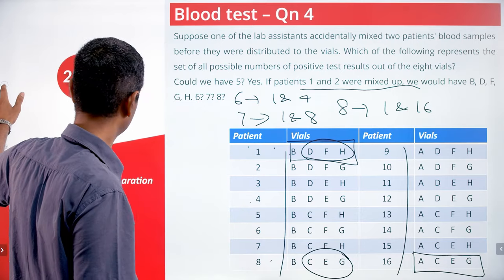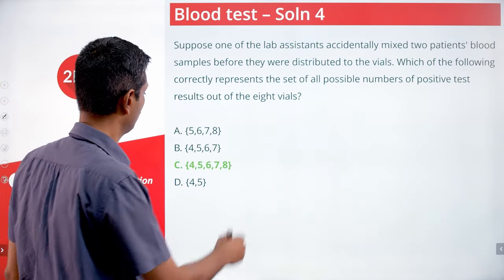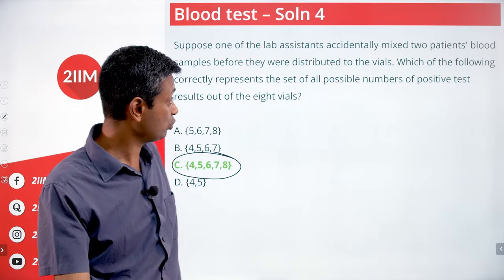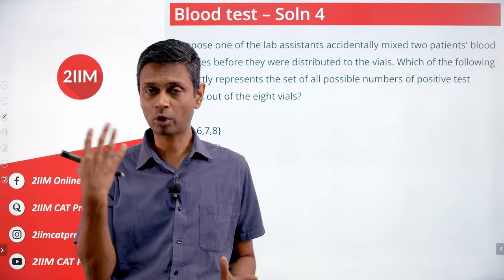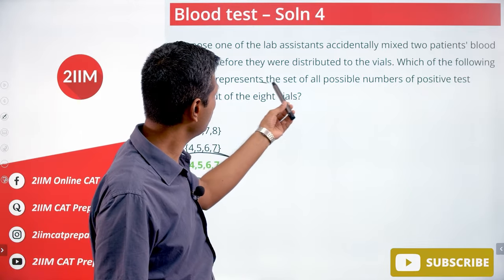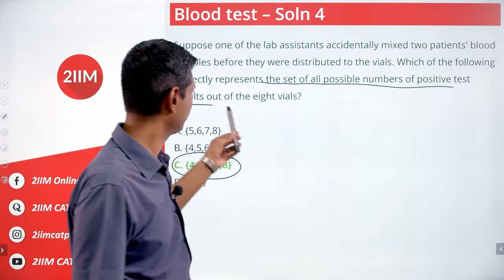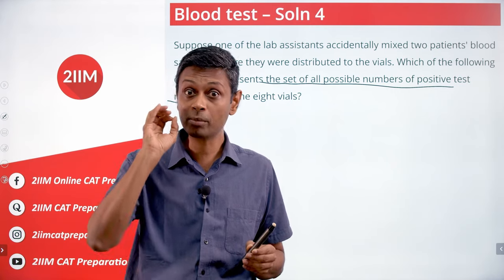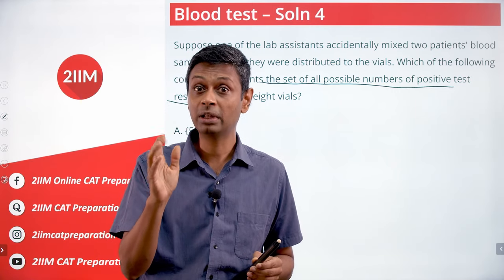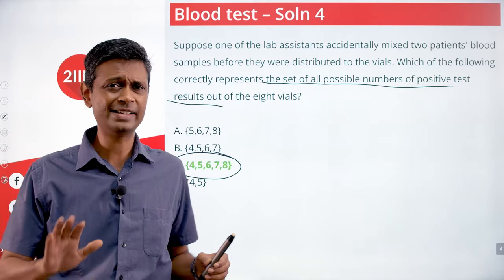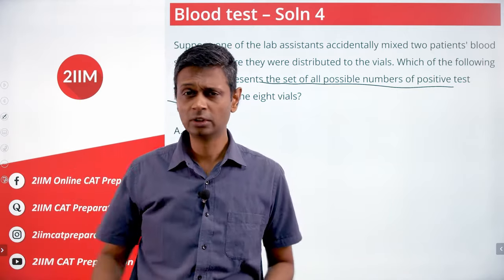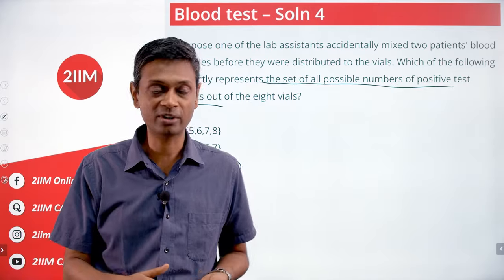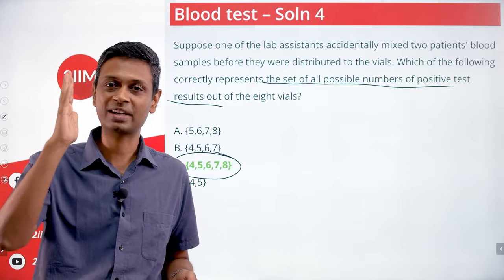So the number of vials that could test positive could be four, five, six, seven, or eight — all five possibilities. I found this tricky because I didn't read the question carefully. The key phrase is 'set of all possible numbers of positive test results out of the eight vials' — it's asking how many vials turn positive, not which patient or vial name. Read the question once, twice, thrice — that's a very crucial habit.